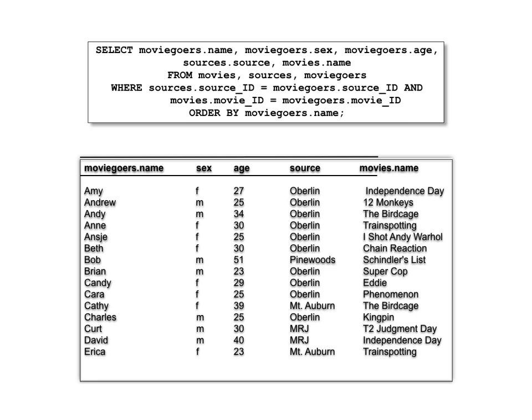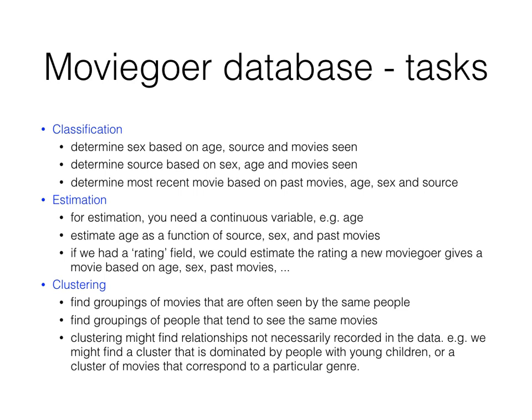Applying data mining tasks to the moviegoer database: classification might determine gender based on age, source, and movies seen — gender is discrete, male or female. Estimation expands to a continuous variable; for example, estimating age as a function of source, gender, and past movies seen, or estimating the rating a moviegoer would give a movie.